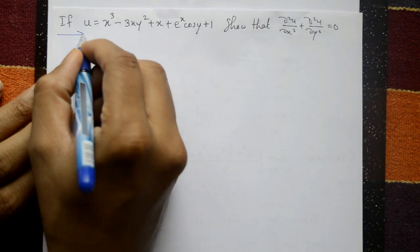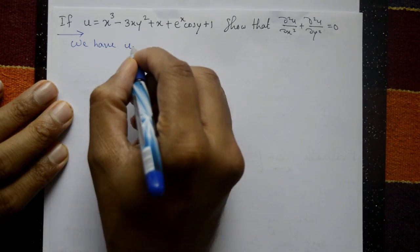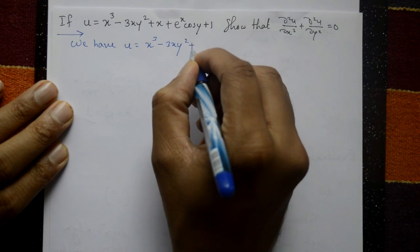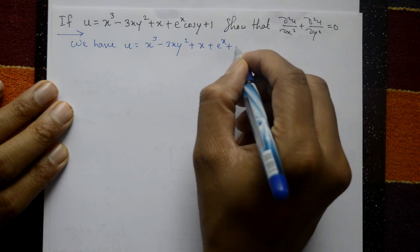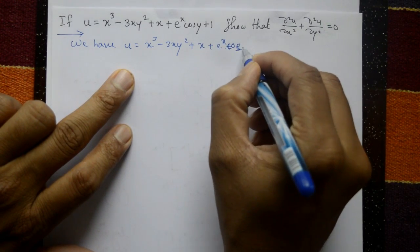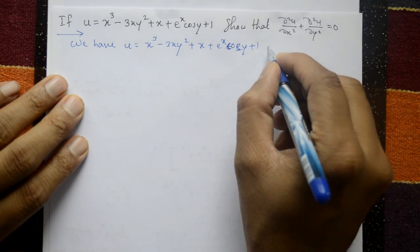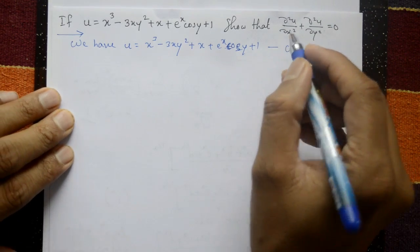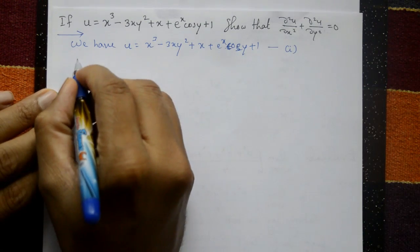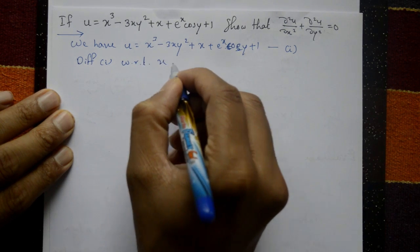Solution: we have u = x cube minus 3xy square plus x plus e raised to x into cos y plus 1. This is equation number 1. Now partially differentiate equation number 1 with respect to x.